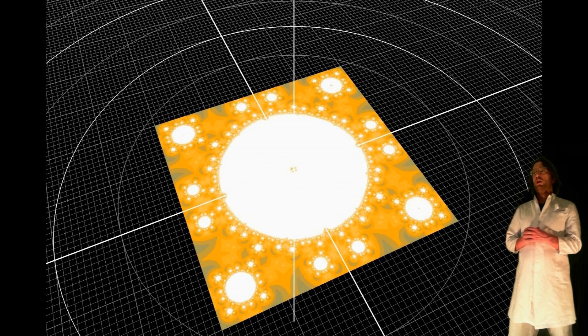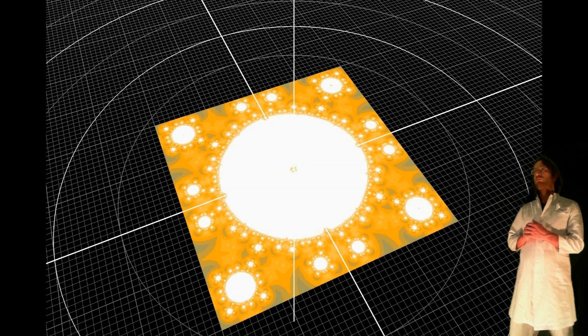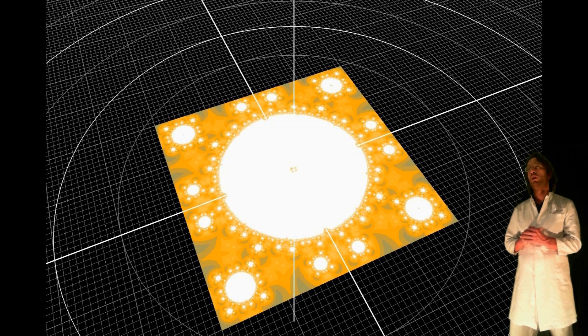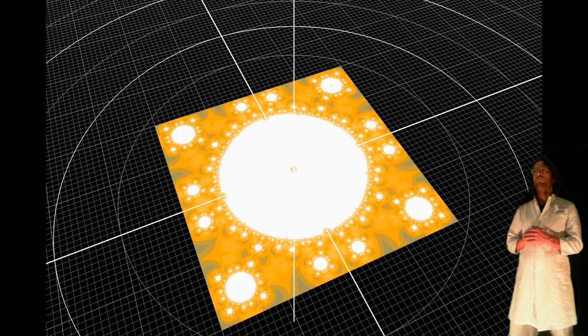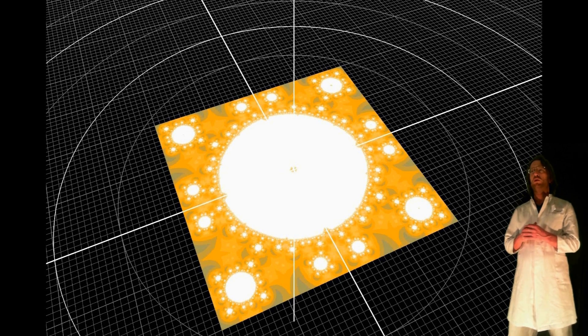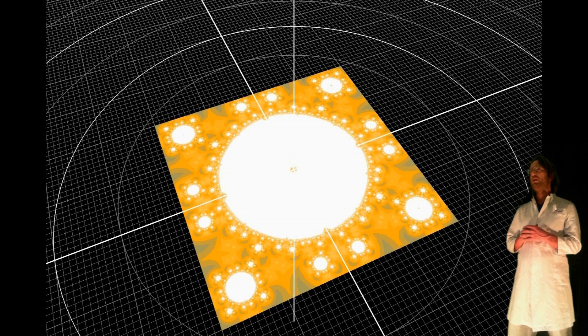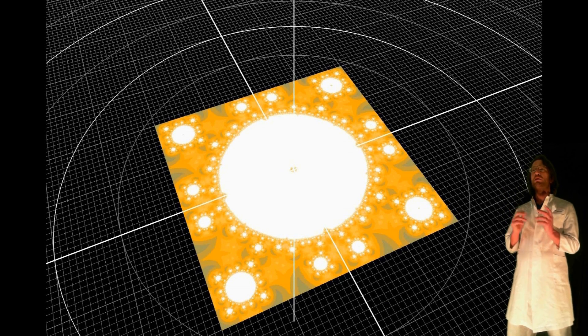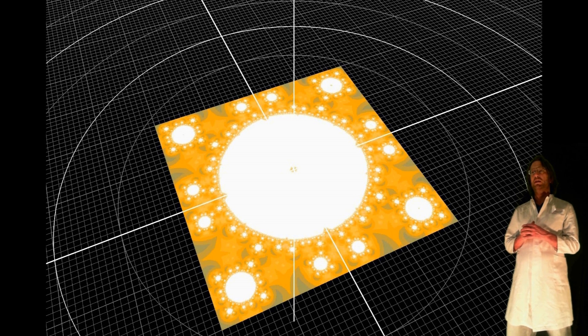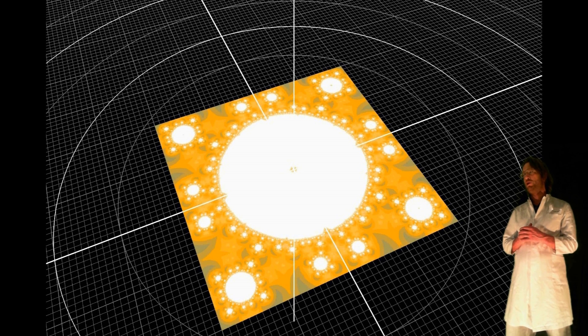These white circle structures are accumulations of points that do not diverge under the iteration. These points move around during the iteration process but they never leave a certain radius. All the colored points leave the radius just mentioned and seem to diverge towards infinity. The different colors indicate in which iteration that happened.